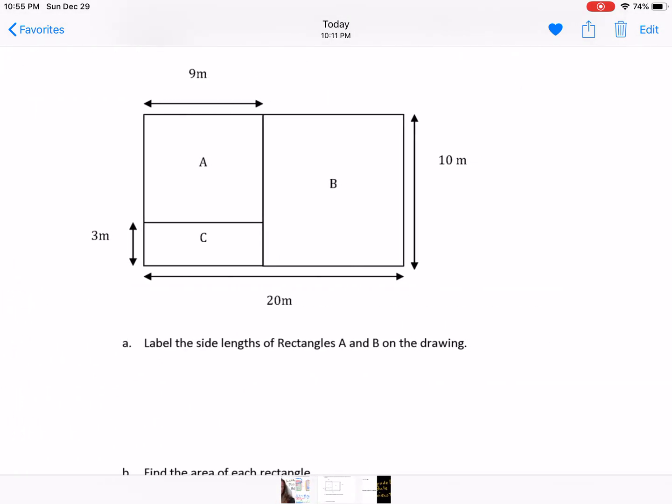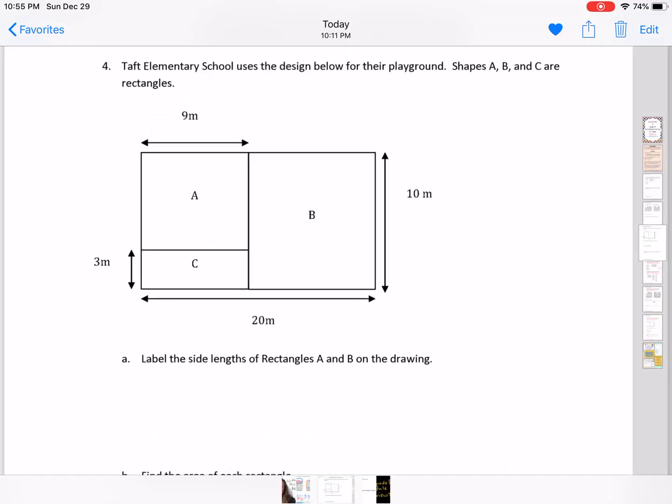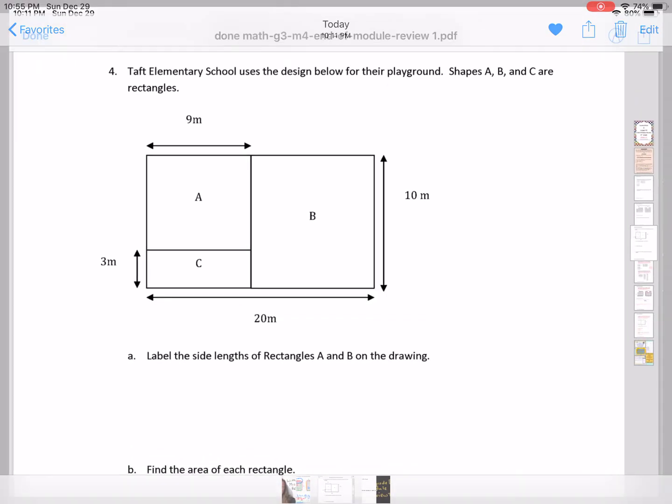Then number 4 says, Taft Elementary School uses the design below for their playground. Shapes A, B, and C are rectangles. Label the side lengths of rectangles A and B on the drawing. Really important when we do that, that we include the M for meters. And then B, find the area of each rectangle. And then C actually says to find the area of the entire playground. Explain how you found the area of the playground. So those are the things we'll do.